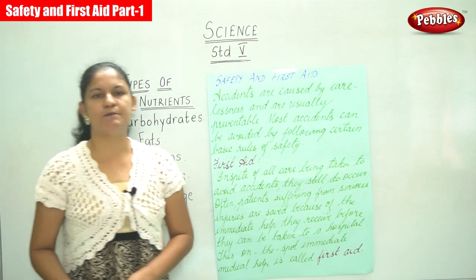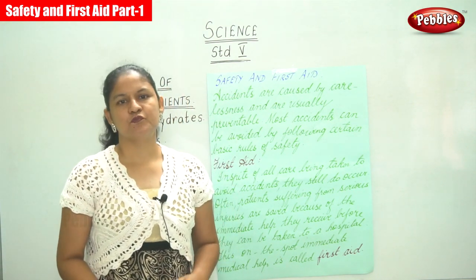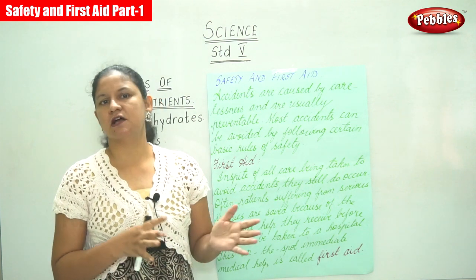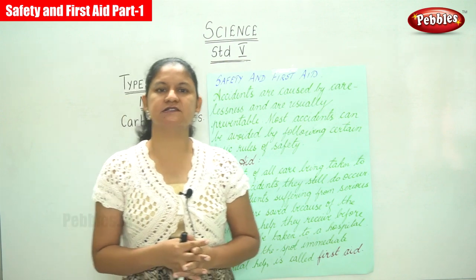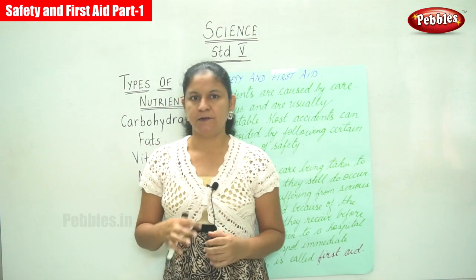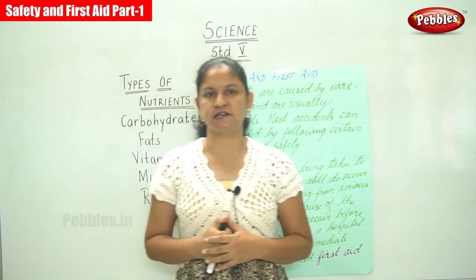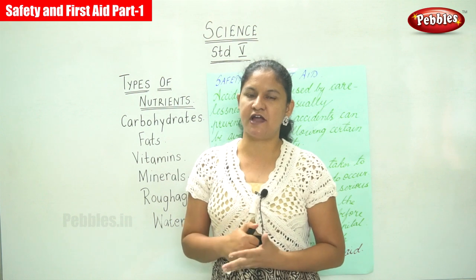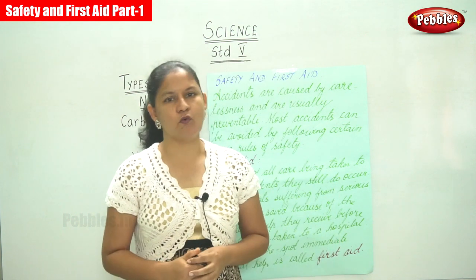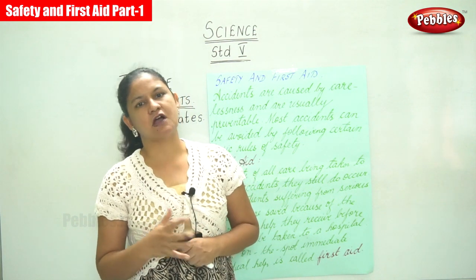So far we discussed about good health and the types of diseases. We looked at how to maintain good health, which is by eating a balanced diet — a diet that includes all the essential nutrients: carbohydrates, fats, vitamins, minerals, roughage, and water.